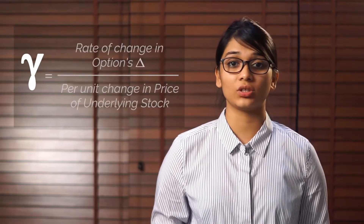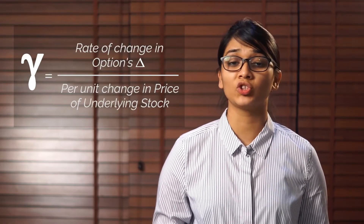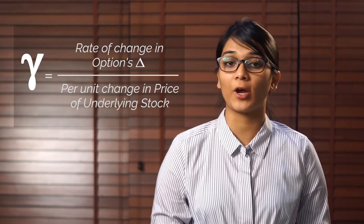Fourthly, Gamma measures the rate of change in an options delta per 1 rupee change in the price of the underlying stock. To make it easier to remember, think of Delta as speed and Gamma as acceleration from high school physics. In simpler terms, it represents the change in the value of the underlying asset and is more closely tracked by people who sell options.